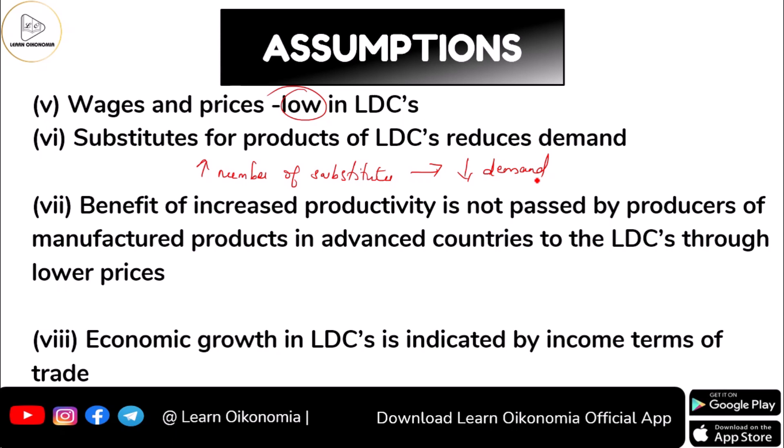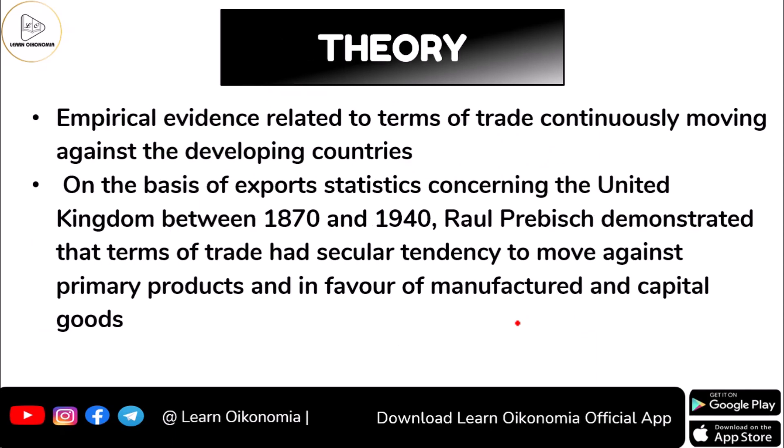The benefit of increased productivity is not passed by producers of manufactured goods in developed economies to the least developed economies through lower prices. This is considered one of the primary problems in the trade relationship between advanced economies and LDCs. Economic growth in underdeveloped economies is indicated by income terms of trade.